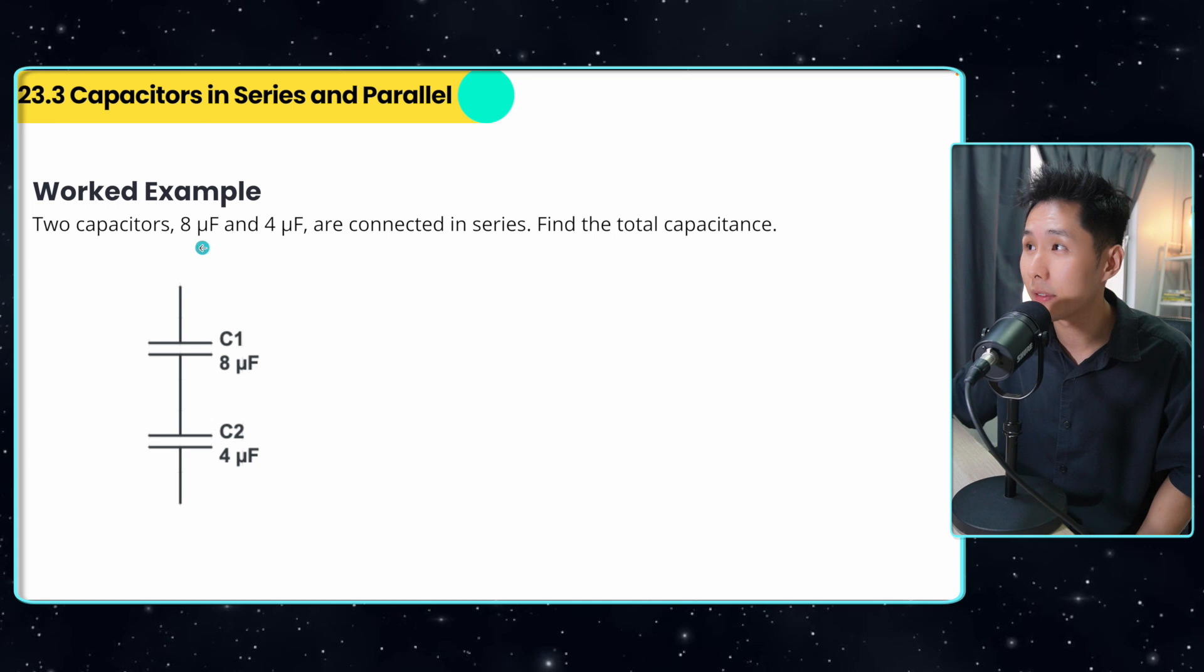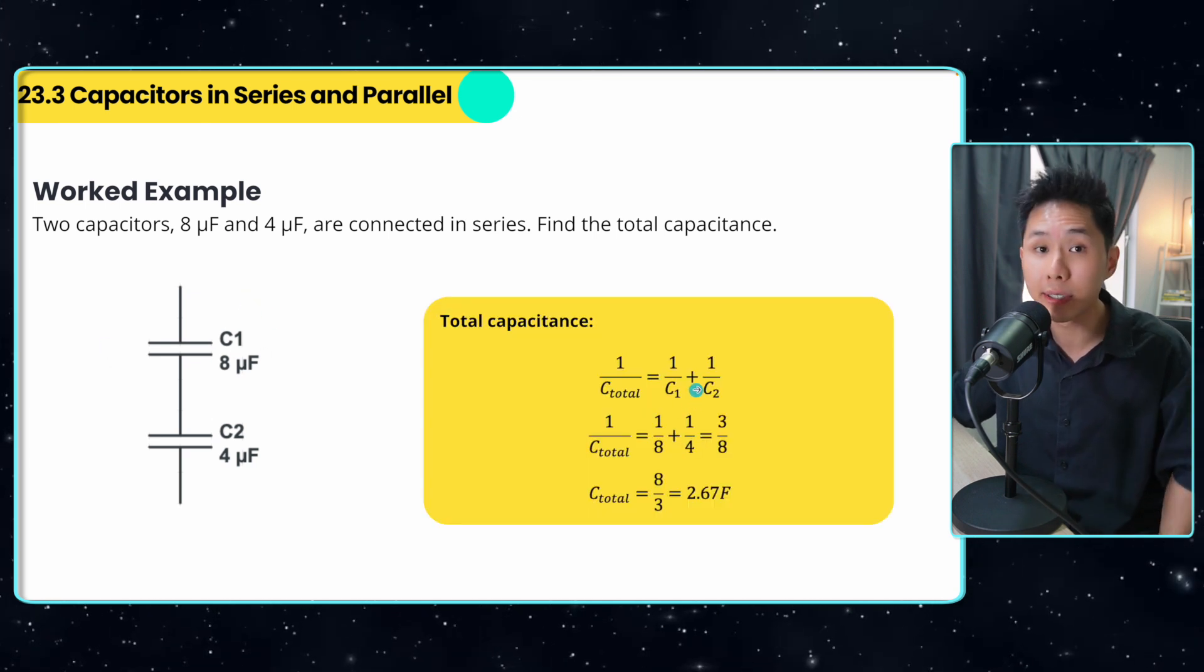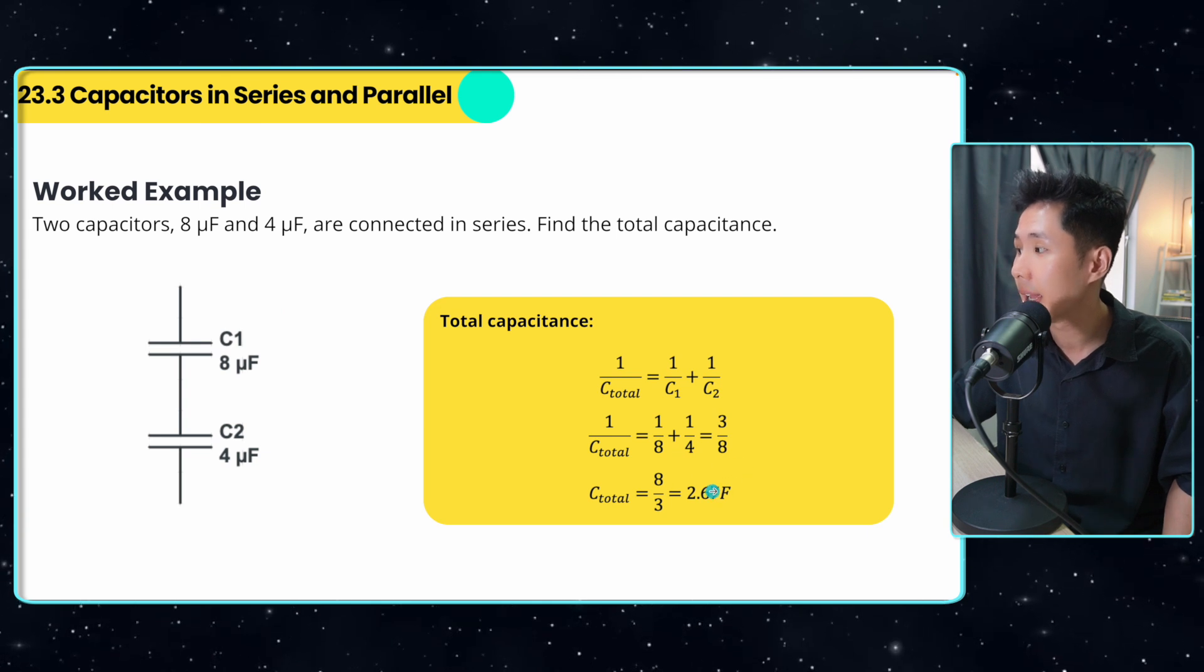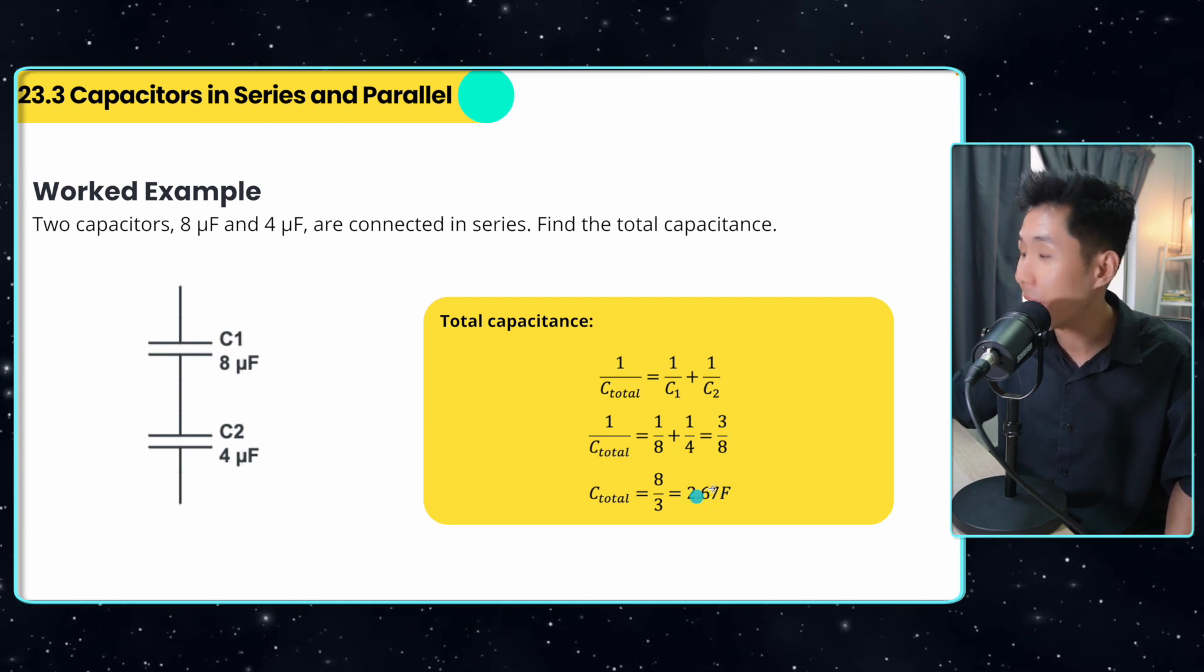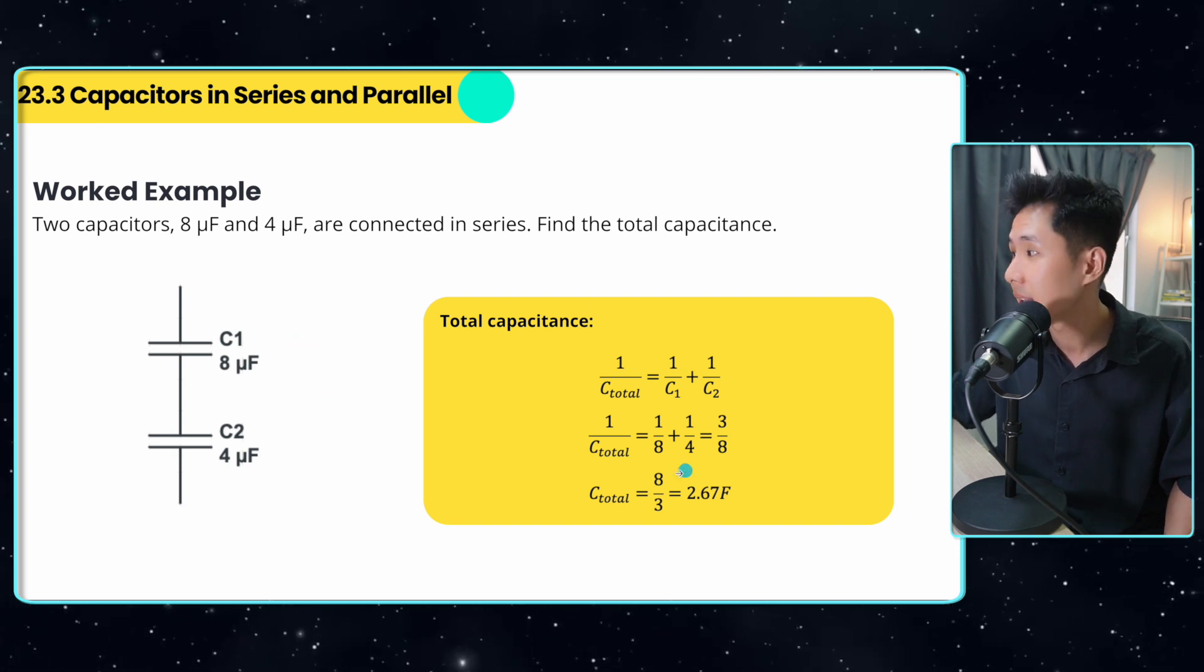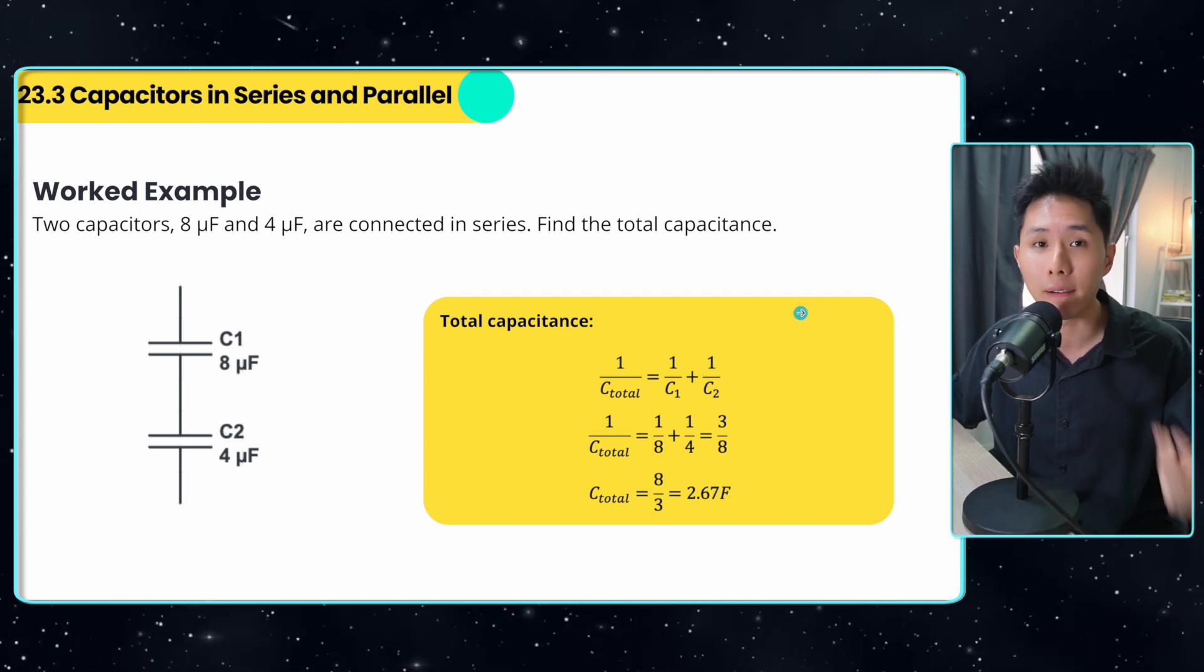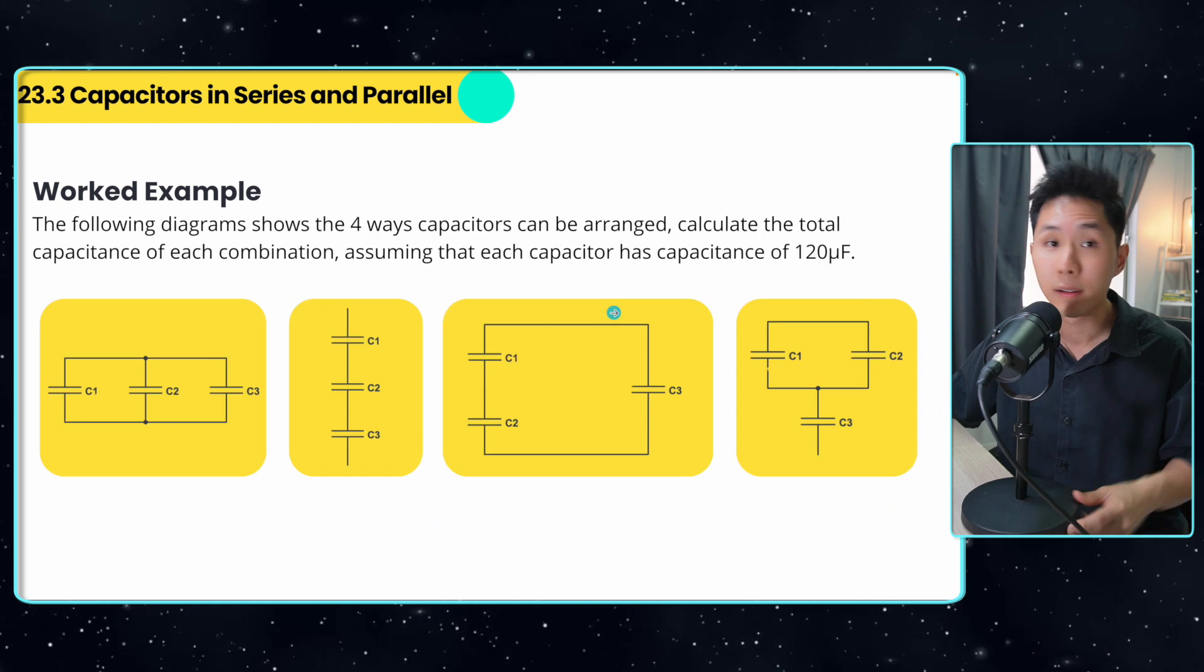Now, as for the second worked example, you have two capacitors, but now they are arranged in series instead. We can just use the formula, substitute the value and would have gotten the amount of capacitance. By the way, you can see that when two capacitors are arranged in series, the total capacitance is less than either one of them. That's one characteristic of capacitors arranged in series.